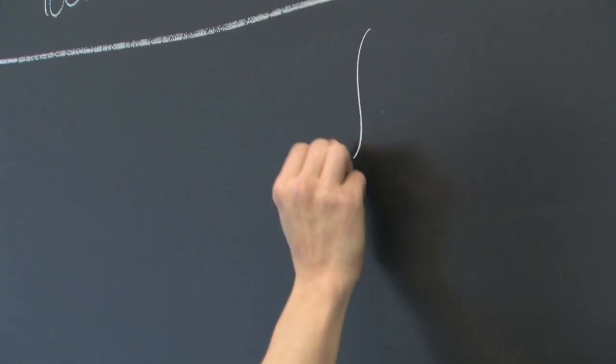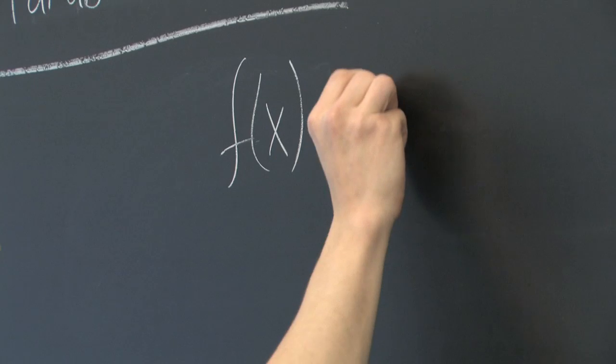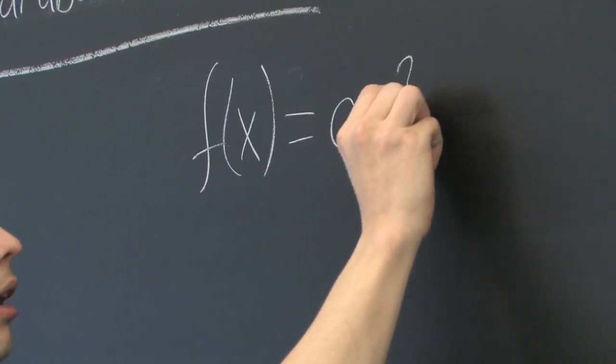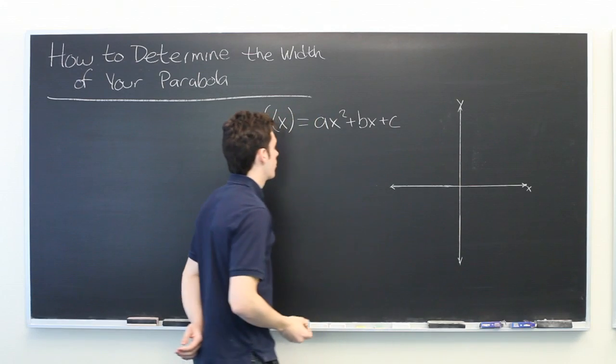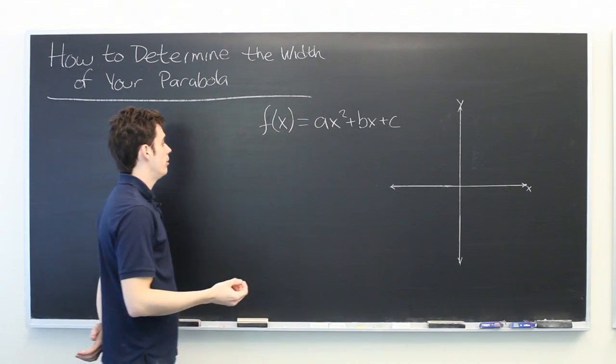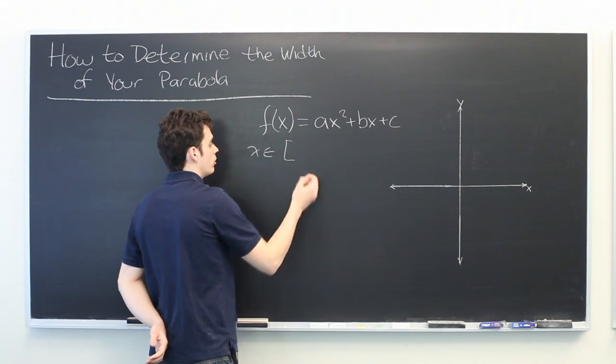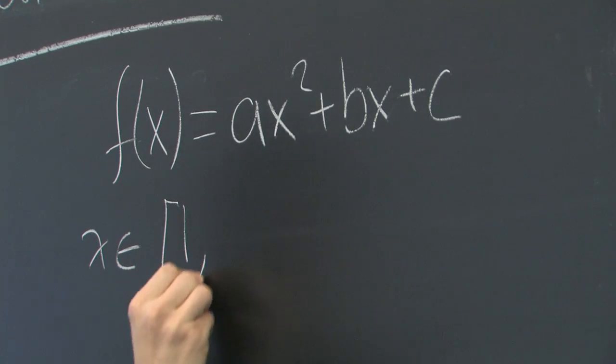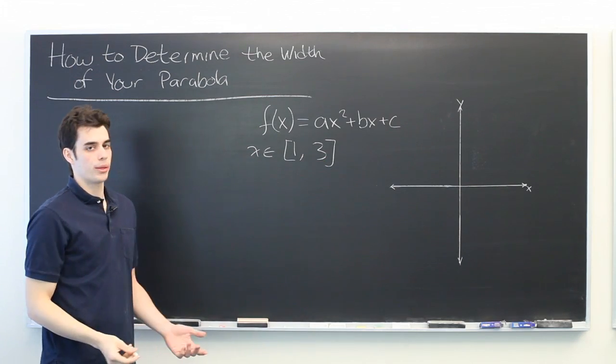Let's say you're given a parabola of the form f(x) = ax² + bx + c, and you're told it's defined on some interval, say from 1 to 3, and you want to know what the width is.